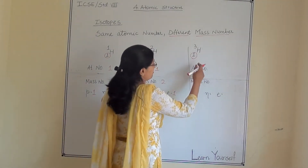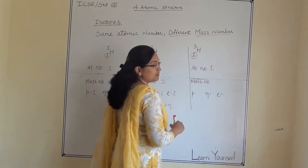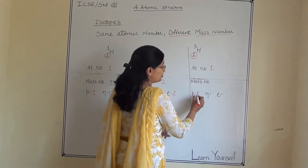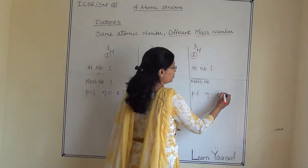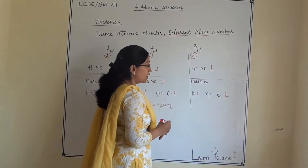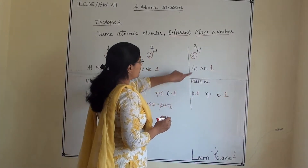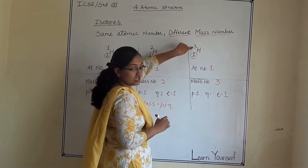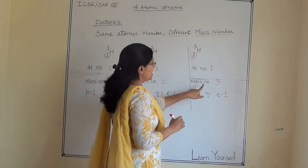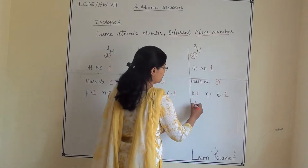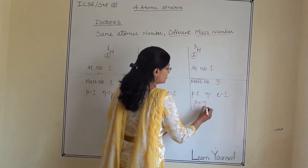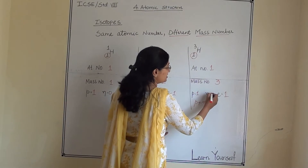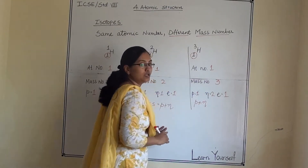In tritium, the atomic number is one, so the proton count is one and the electron count is one. But the mass number is three. Since protons plus neutrons equals mass, the neutron count must be two: one plus two equals three.